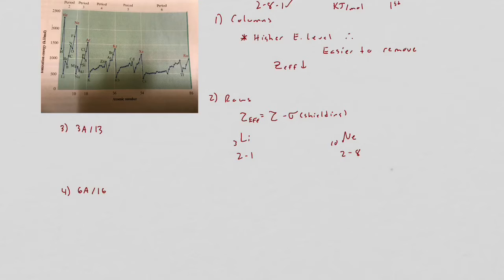There's basic trends in both columns and rows, and then there's a couple of anomalies that we have to discuss. For columns, the explanation is very easy. As you go down a column it tends to get easier to remove electrons.